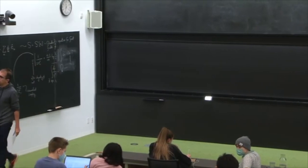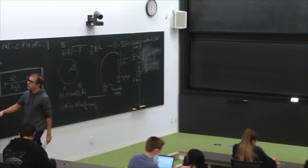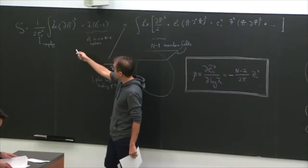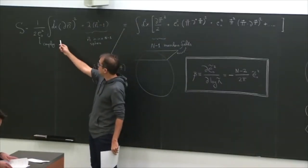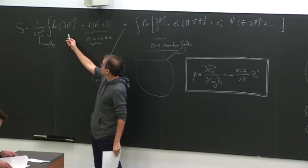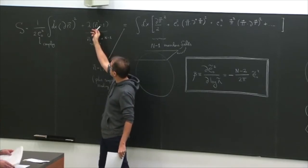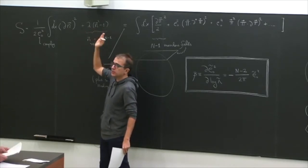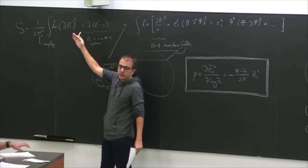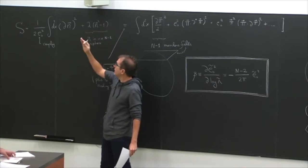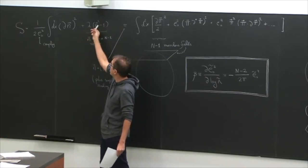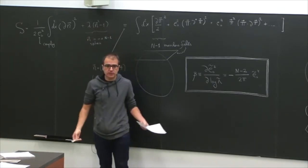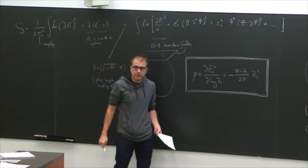The goal was to study the O(N) nonlinear sigma model, which is a model where we have a vector n that lives on a sphere. We can either keep in mind that n needs to be on the sphere, or we can put a Lagrange multiplier and force it to be on the sphere — it's the same thing.